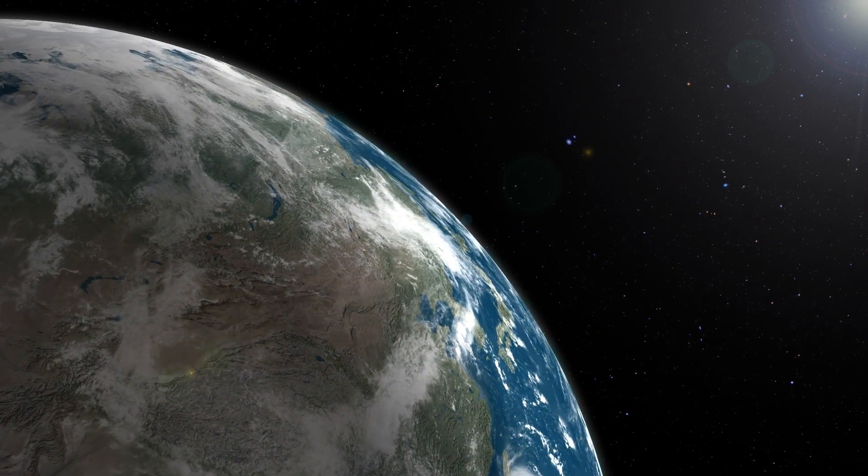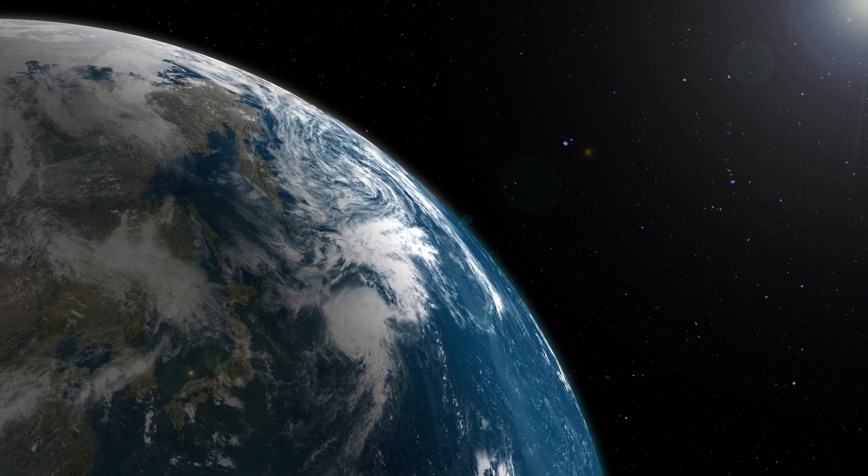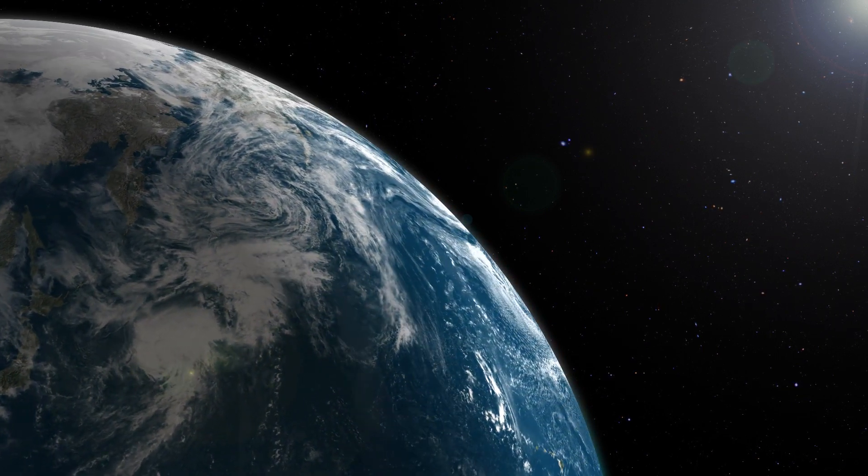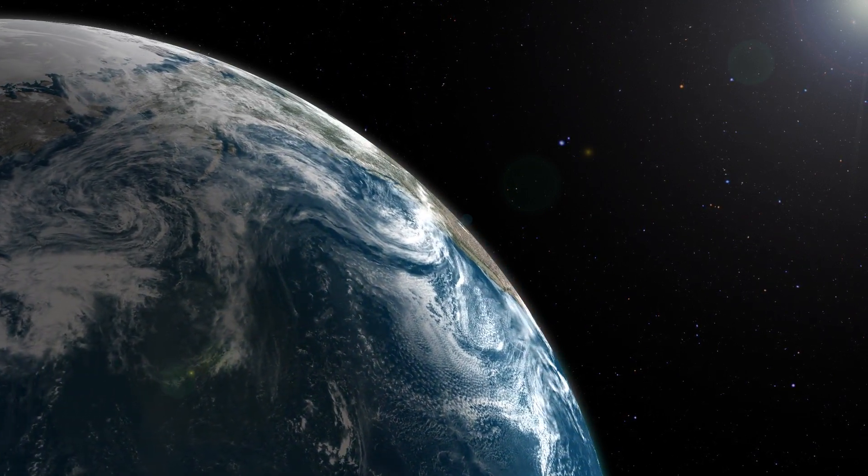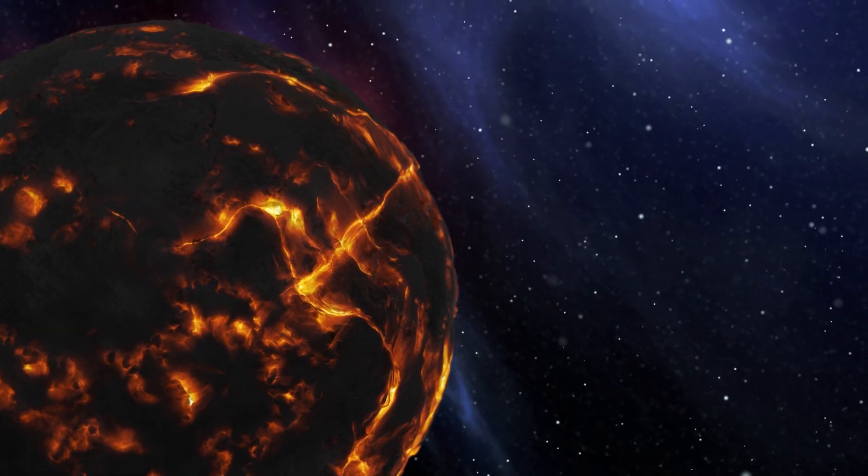The Earth is known to have experienced five mass extinctions in the last 540 million years. The largest of these events occurred 250 million years ago and killed 95 percent of the species on the planet.